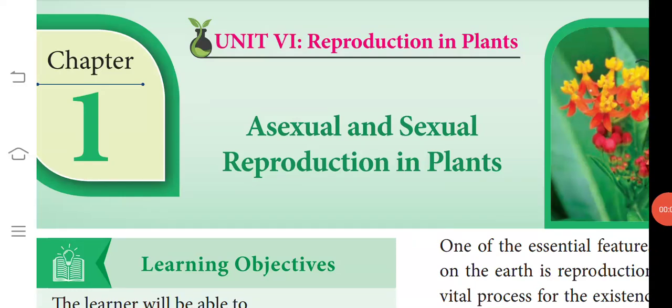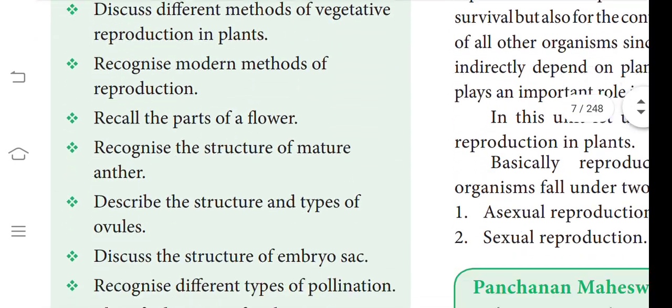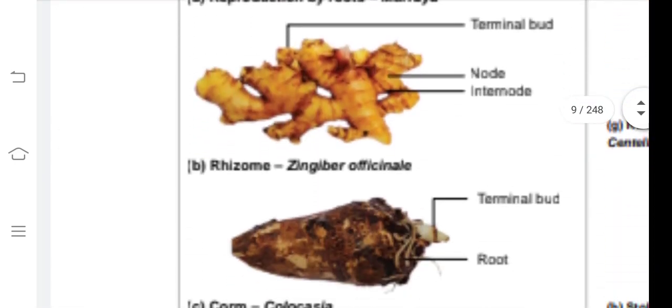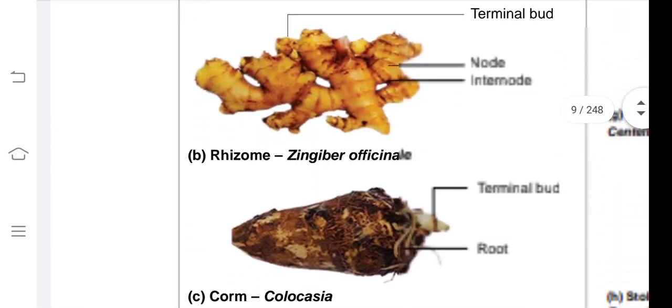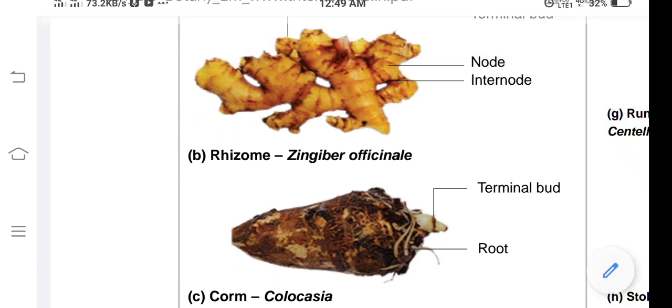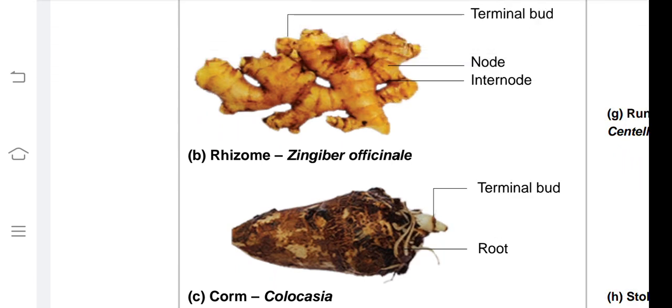Hello students, welcome to Class 12 Biology. This is the first revision session for your biology class. For this week's test you will write in biobotany lesson one — the name of the lesson is 'Asexual and Sexual Reproduction in Plants.' The first part is quite familiar to you. In the second part, I will discuss the answers and how you should write them.